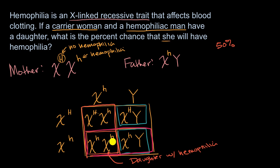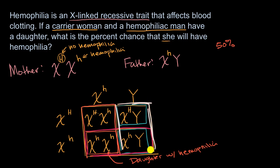If you said, given that they had a son, what is the percent chance that they don't have hemophilia? Well, given that they have a son — those would be those two scenarios — one out of those two scenarios the son does not have hemophilia, so that would again be 50%. Hopefully this was useful.